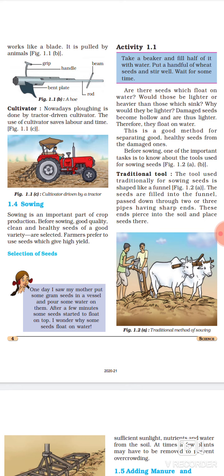So, let's move to another basic practice of agriculture, that is sowing. Sabse first practice jo hamne agriculture mein padhi, woh thi preparation of soil. Now we'll talk about sowing. Sowing is an important part of crop production. Ye bhi ek important part hai crop production ka. Before sowing, good quality, clean, and healthy seeds of a good variety are selected. Sow karne se pehle, hum seeds sow karte hai.